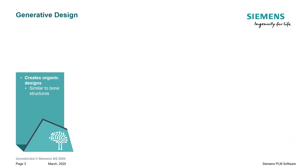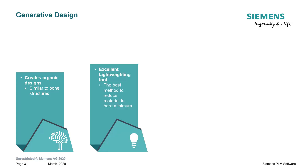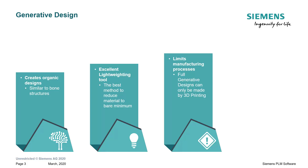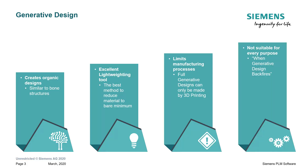There are some things we need to understand about generative design. For one, it generally creates an organic-looking design, similar to a bone structure in a skeleton. It is an excellent lightweighting tool — possibly the very best method to reduce material to a bare minimum. However, it does limit manufacturing processes; a full generative design can only be made by 3D printing. It's also not suitable for every purpose — Google 'when generative design backfires' to see what that means.